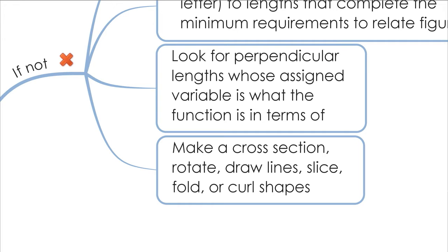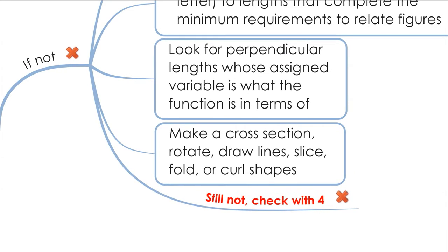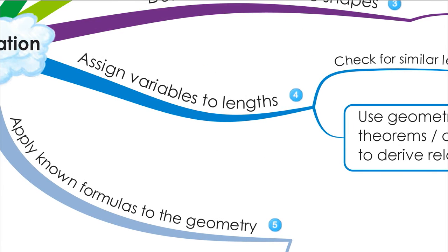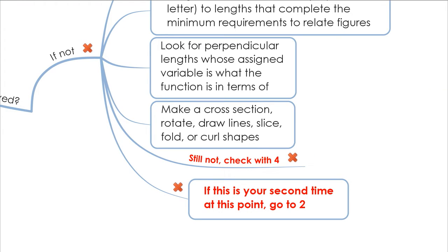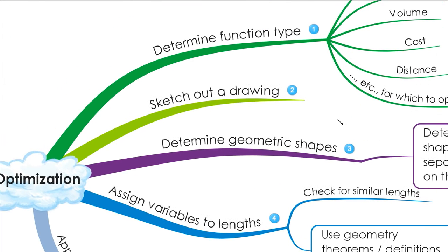If you're getting stuck, go back and check step four — assigning variables to lengths. You may have assigned variables that don't have anything to do with solving the problem. If you've already checked that and you're still stuck a second time, there might be something wrong with the picture itself, so go back to step two. Read carefully and make sure the drawing correctly interprets what the words say, and see if there's something you missed or overlooked.